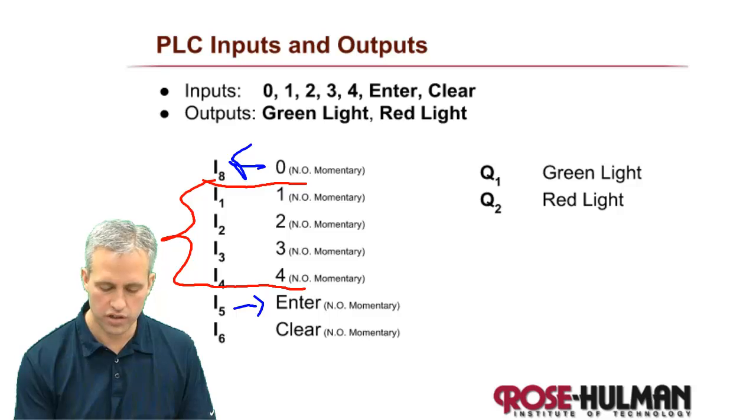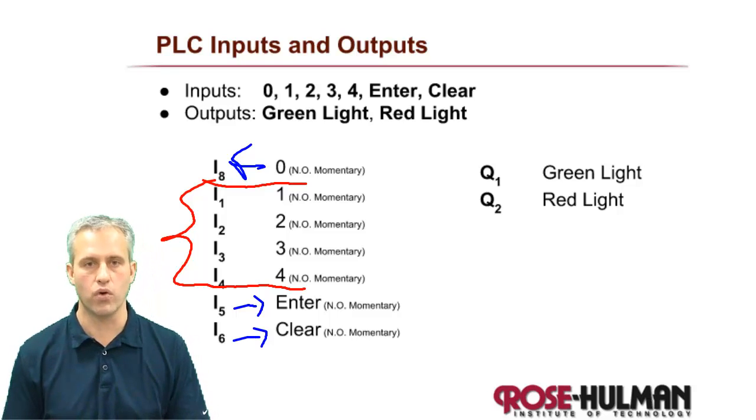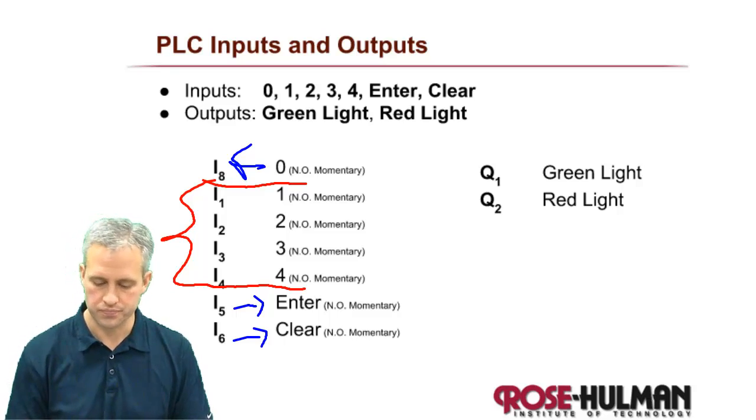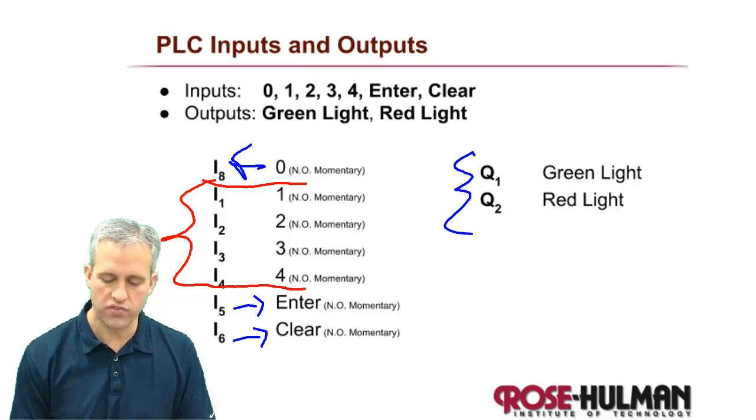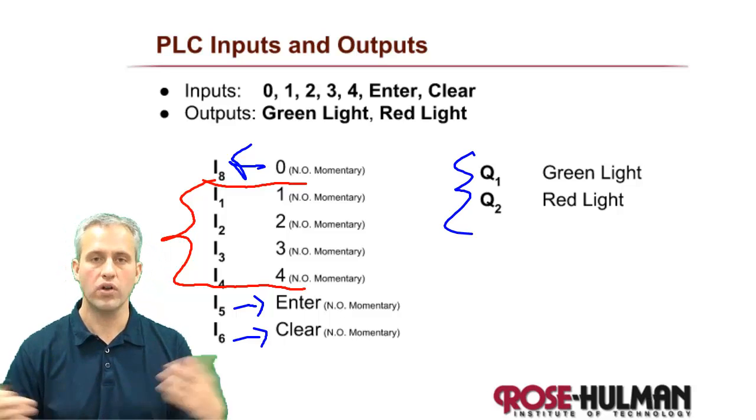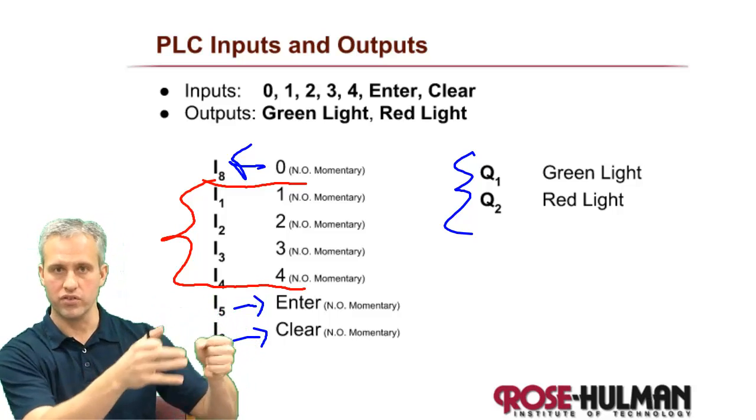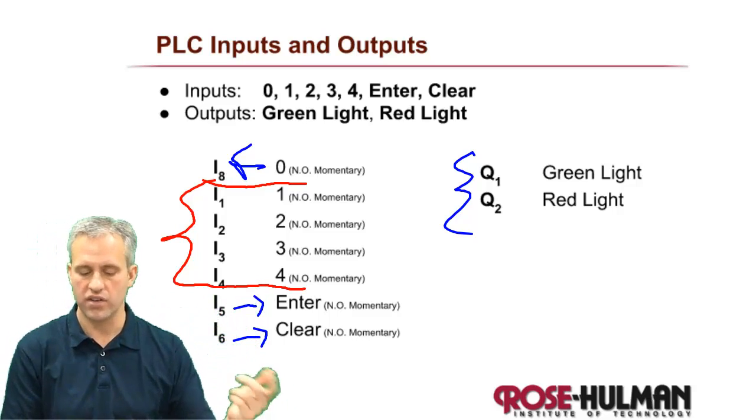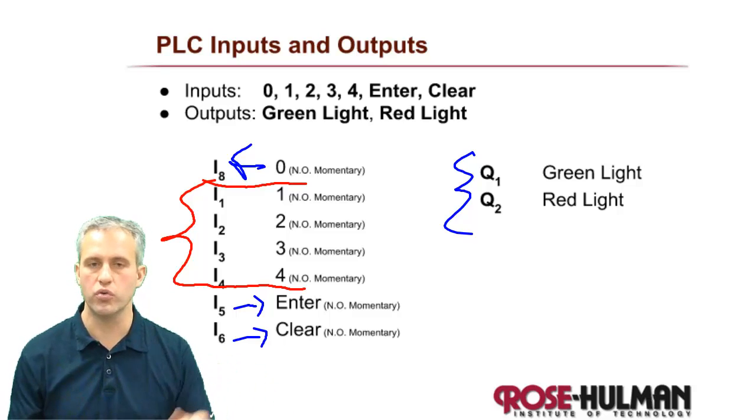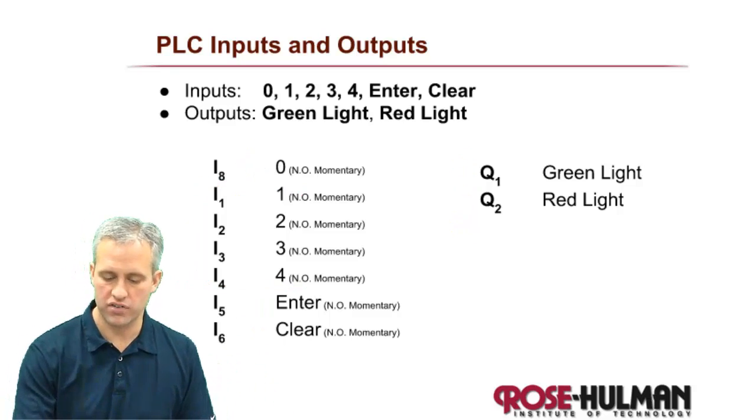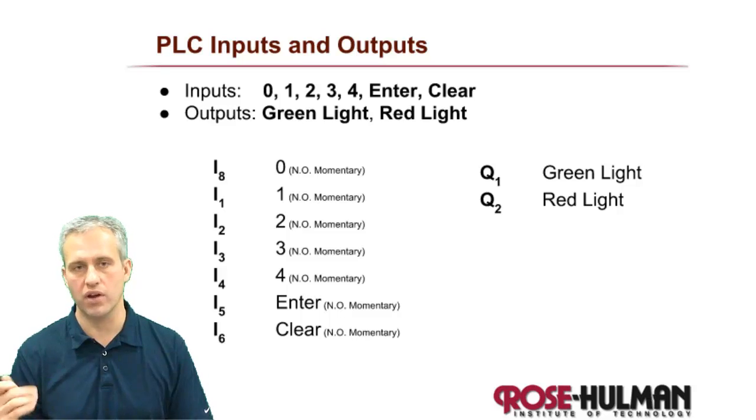And then enter and clear, same story. I just had to kind of pick one. I decided I5 would be where I would wire the enter button to, and I6 would be for the clear. Likewise, for the outputs, you have to say what's going to be connected to your red light, so it's like a real bulb that's red or green. I decided Q1 would be green, Q2 would be red. Arbitrary decisions. We're not going to really build the thing anyway, so that's what I decided.